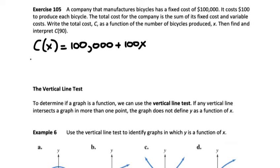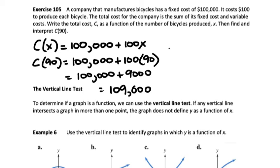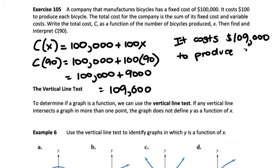The second part says to find and interpret C(90). When I have a number inside the parentheses, I plug it in for x. So that gives me 100,000 plus 100 times 90. Doing the math: 100,000 plus 9,000 equals a total cost of $109,000. Interpreting this: 90 is the number of bicycles, so it costs $109,000 to produce 90 bicycles.